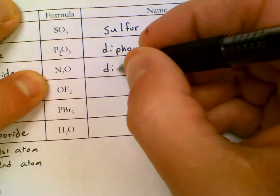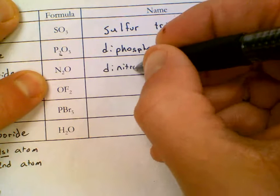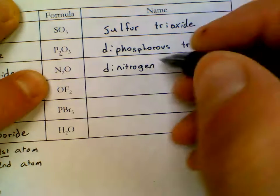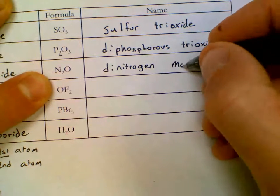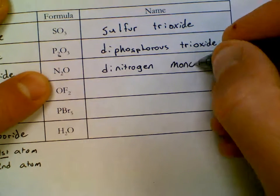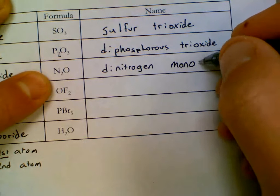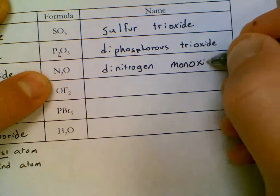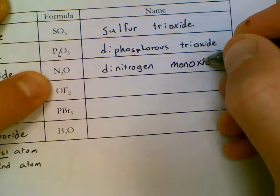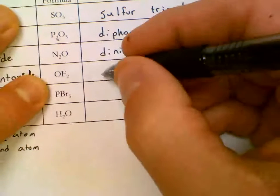Di is going to be subscript two. Full first name, nitrogen. Then we need a subscript no matter what on the second atom. So monoxide. That mono means one. Even though it's not drawn, it's there.